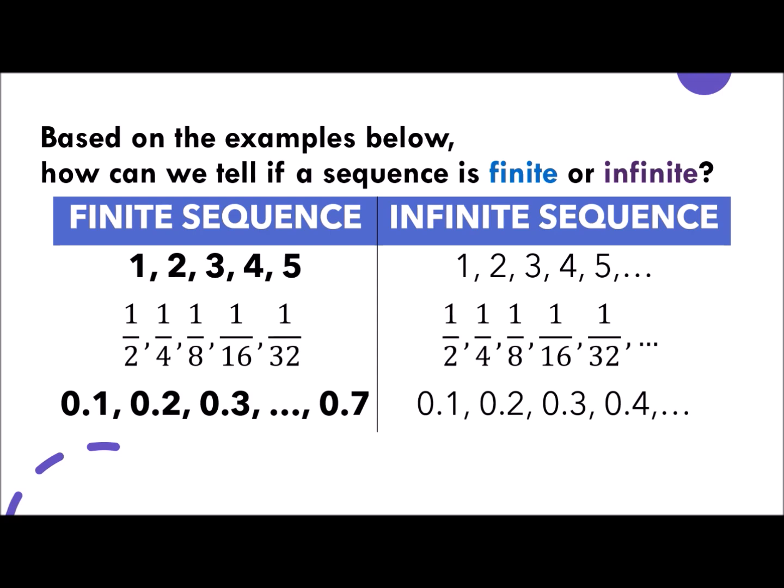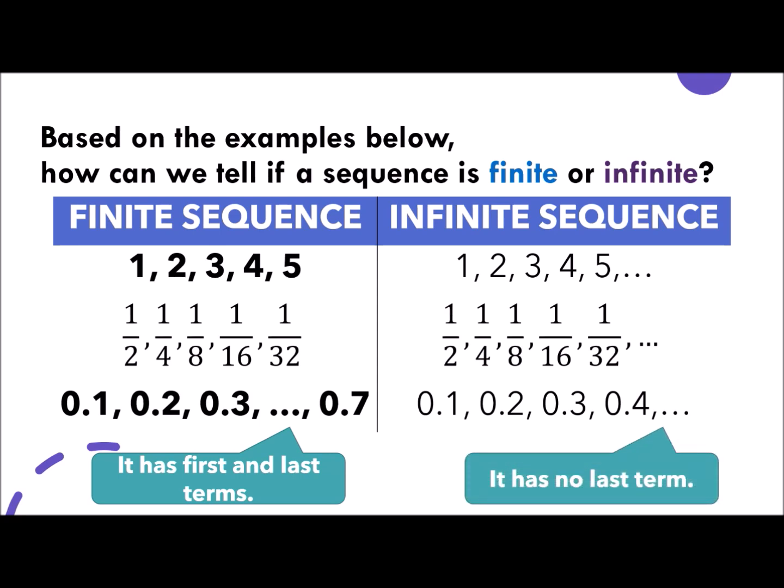Do you have any idea? Okay. As you can notice, the finite sequence has first and last terms. Which means it has an end. But on the infinite sequence, it has no last term. The very end symbol of it is an ellipsis. Which means the pattern continues. It has no end. So, I hope this is clear with you.